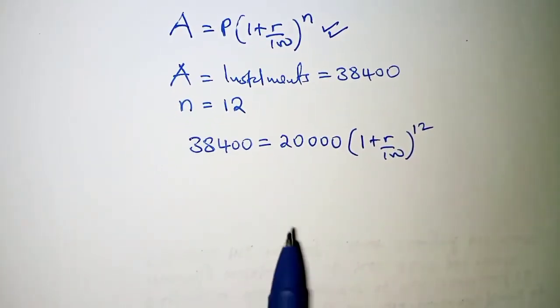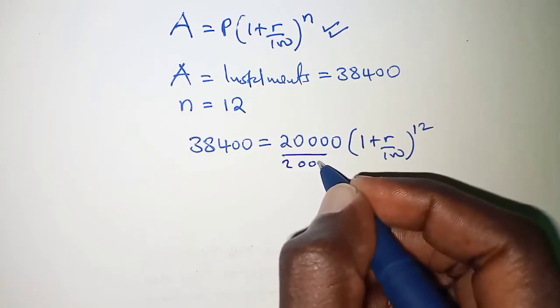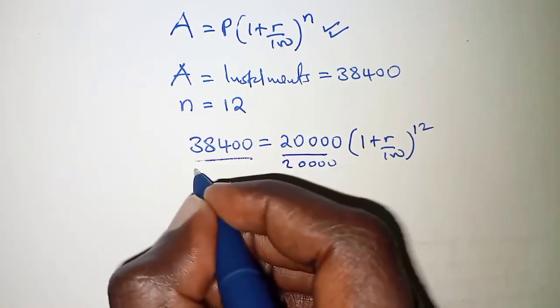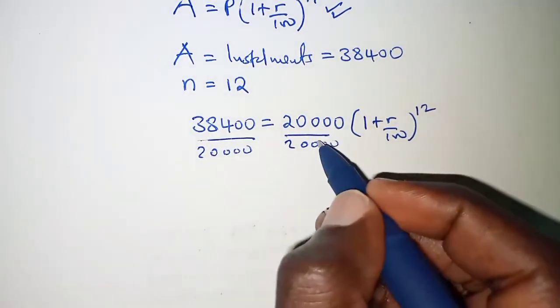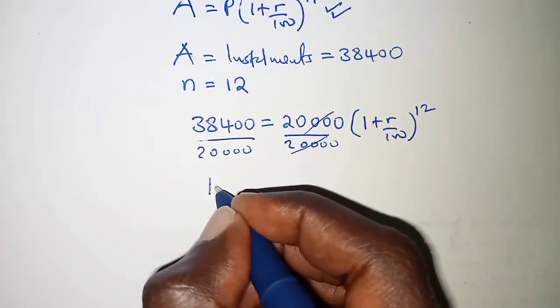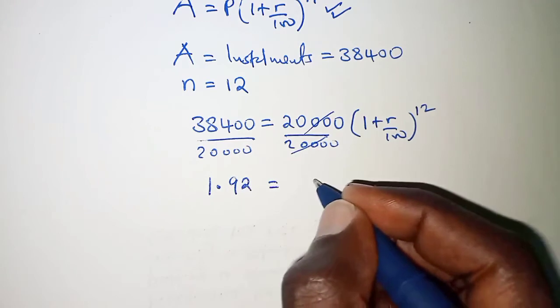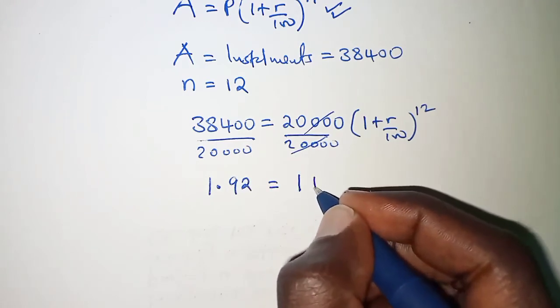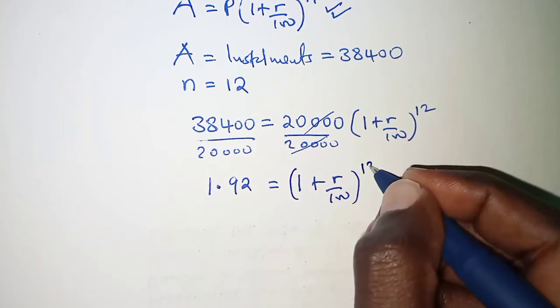So at this particular step we can divide both sides by 20,000. And when you do that, this will cancel and then on the left hand side we have 1.92, and then on the right hand side we have 1 plus r over 100 raised to power 12.